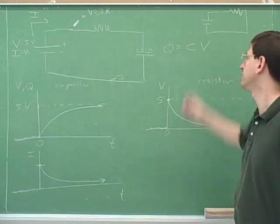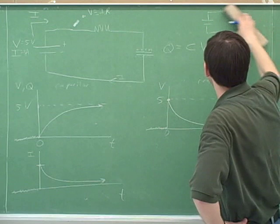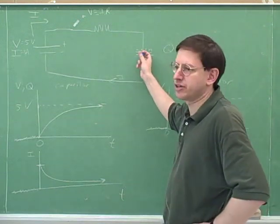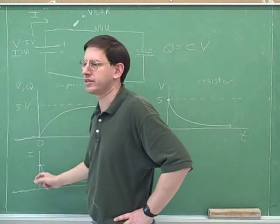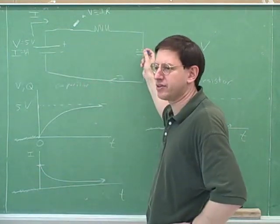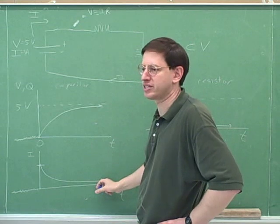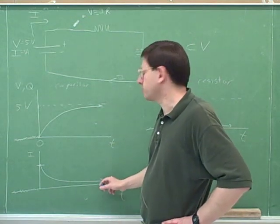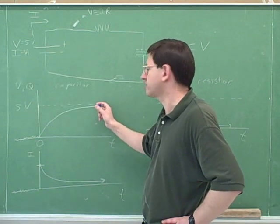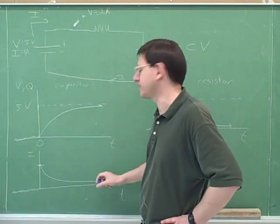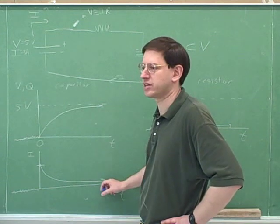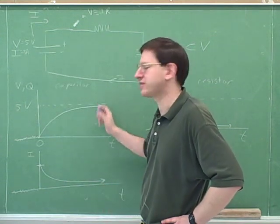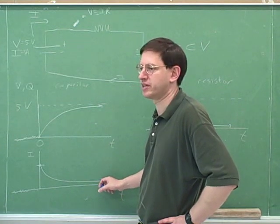If there were no capacitors, there would just be a single current that lasts forever until the battery runs out. Originally there were no positive charges here, so it was easy for the battery to send a strong current. But the more positive charges we get here, the harder it is until eventually it's pretty much impossible. When the current is close to zero, the charge on the capacitor is close to its maximum — the piled-up charges are what prevent the battery from sending any more current.